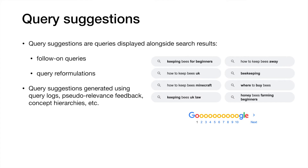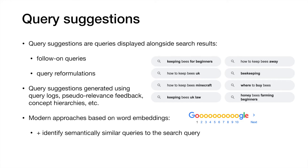Query suggestions, at least in web search, are usually generated from query logs, but there are methods that don't require logs such as those based on pseudo-relevance feedback or concept hierarchies. Our work is inspired by more recent approaches based on word embeddings. These approaches can easily generate semantically similar queries to the original search query, but users performing exploratory search are going to scroll through significantly more search results, so the query suggestions are not going to be relevant to documents lower down the relevance ranking than those currently on screen.